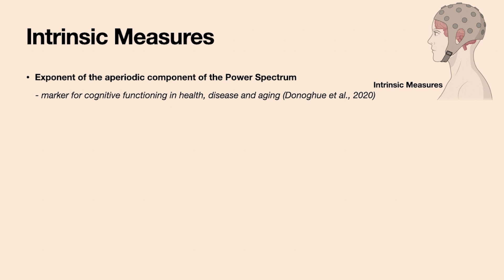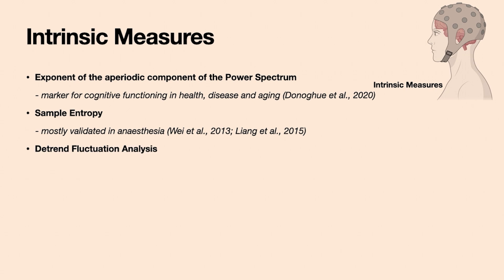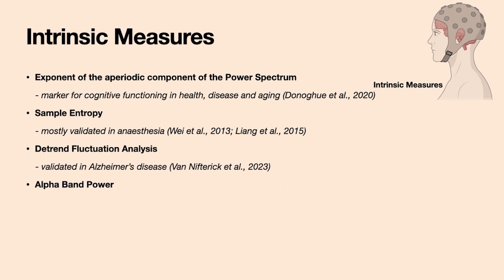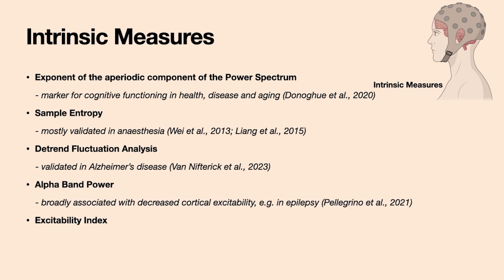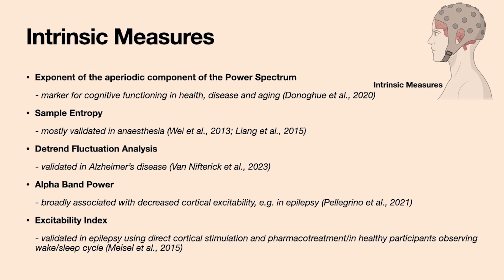For example, for the exponent of the aperiodic component of the power spectrum, people looked into cognitive functioning in health, disease, and aging. For other measures, they looked into consciousness states, and also excitability changes due to disease such as Alzheimer's or epilepsy. Lastly, there's a recent excitability index validated invasively in epilepsy patients before and after pharmacotreatment with direct cortical stimulation, and also validated with healthy participants looking into wake-sleep cycles.